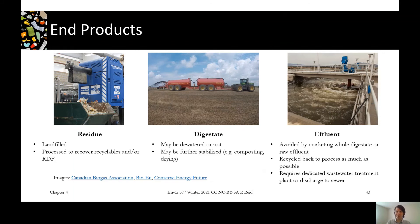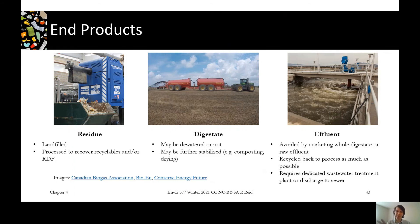Lastly, our effluent — any water we've produced. You can avoid this by not dewatering, but there are many reasons you would want to. This effluent can be used as process water as much as possible: it reduces fresh water inputs and allows you to re-inoculate some of your microbes back into the system. But if you have a lot of effluent and can't discharge to the sewer, you'll have to build a wastewater treatment plant at your anaerobic digester, and many digesters do have their own small wastewater treatment plants.